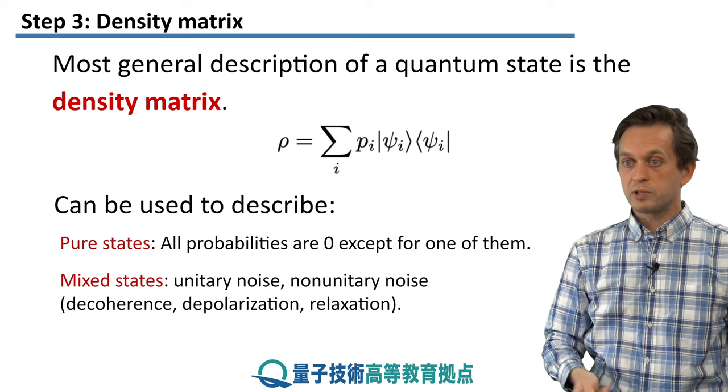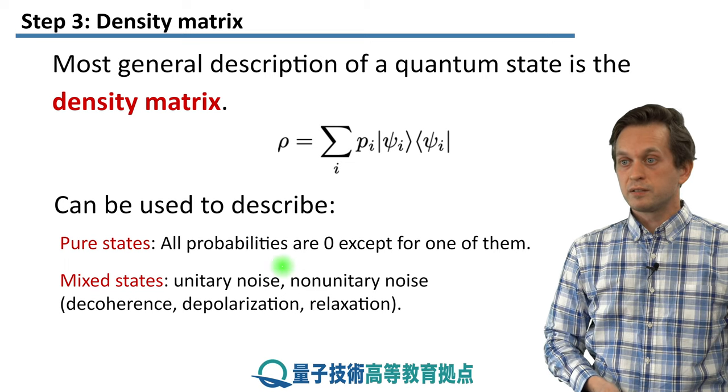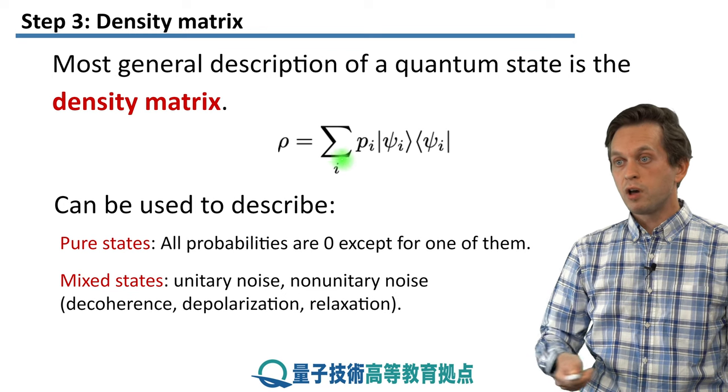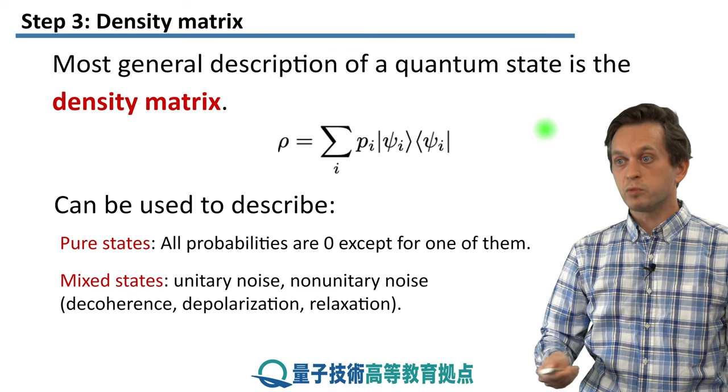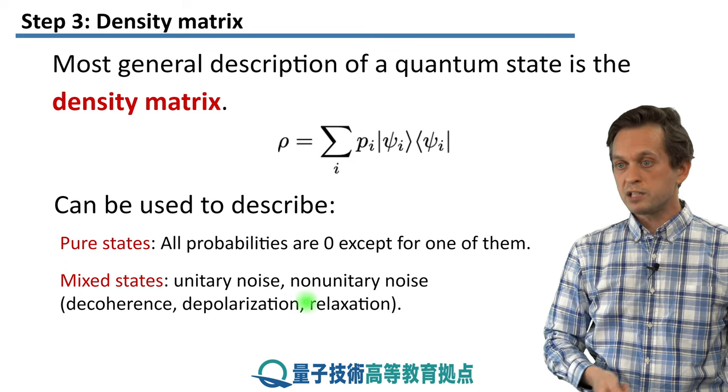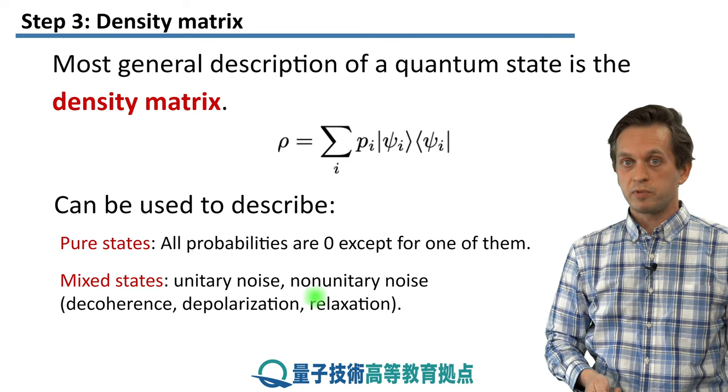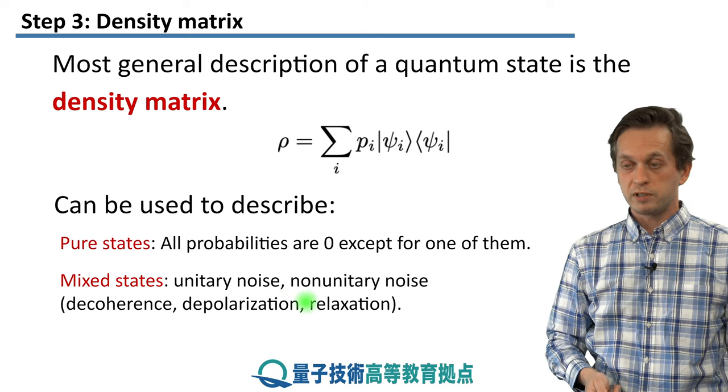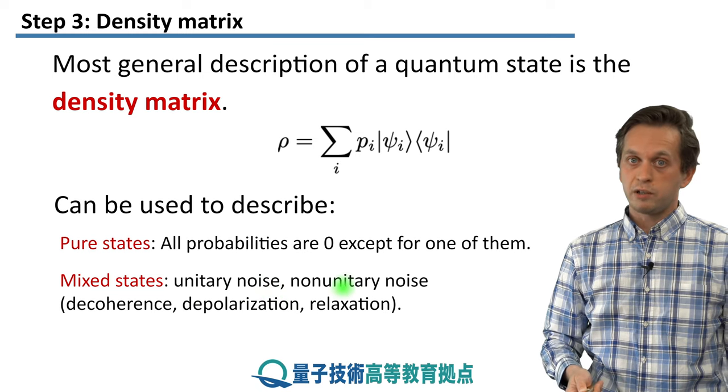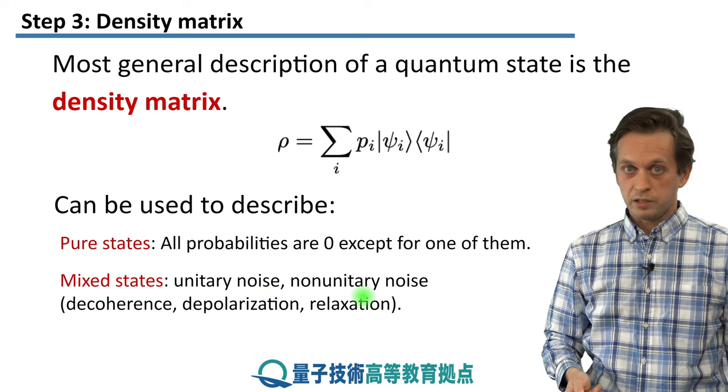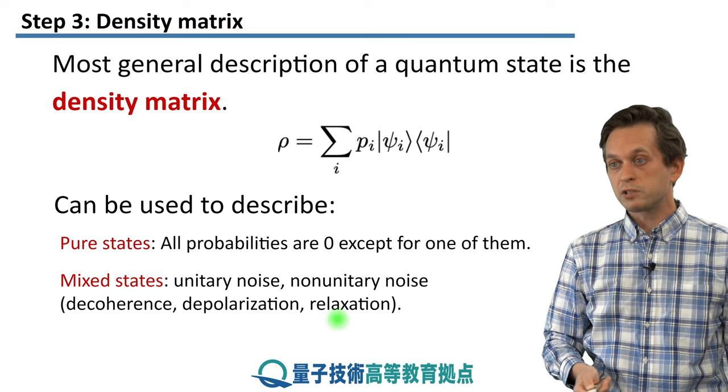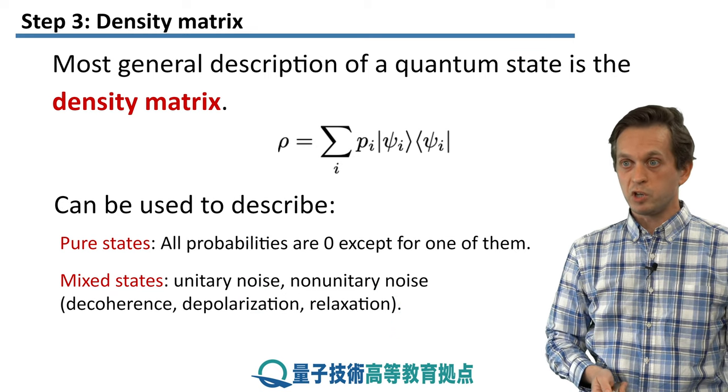So you really just have a single projector projecting onto some state psi i. Or it can also be used to describe mixed states, where you actually have a sum of multiple terms. So not only one of these PIs is non-zero, but multiple of them are non-zero. And this is very useful because it can actually describe, like we demonstrated on the previous example, situations where we have noise either unitary, or later in the course you will also see that it describes situations where we have non-unitary noise, such as decoherence, depolarization, or relaxation of qubits.